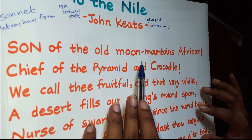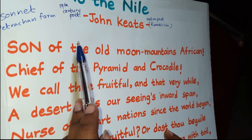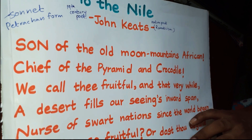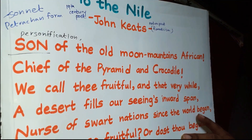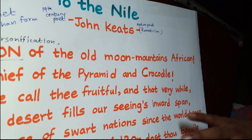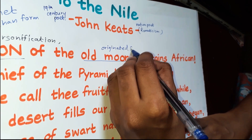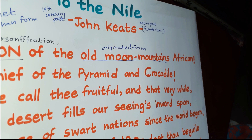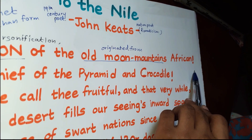The first line is: 'Son of the old moon mountains African.' The poet is addressing the Nile River, calling it the 'son' — here you can directly see the technique of personification. The phrase 'son of the old moon mountains' refers to the belief that the Nile River originated from the old moon mountains, just as we believe that the Mahavali River originated from Sri Pada or Adam's Peak.